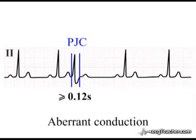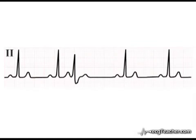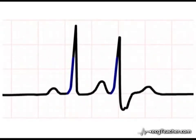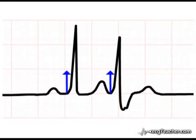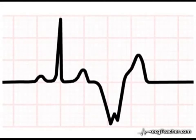How can we tell such an aberrantly conducted premature junctional contraction from a premature ventricular contraction? Often with great difficulty. However, as the initial events of ventricular depolarisation occur as normal, the initial portion of the QRS complex of an aberrantly conducted premature junctional or premature atrial contraction will often be identical to the initial period of the preceding normal complexes. If the block is close to the AV node, this initial period can be very short. In practice, if a wide premature QRS complex is initiated in the same direction as the normal complexes — observed in several leads — it is likely to represent an aberrantly conducted premature atrial or junctional contraction. If the complex is initiated in the opposite direction, it is likely to represent a premature ventricular contraction.